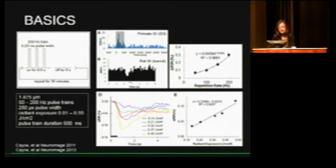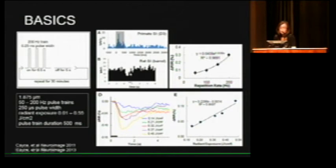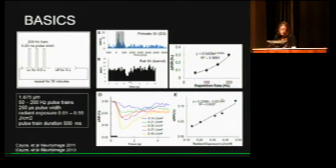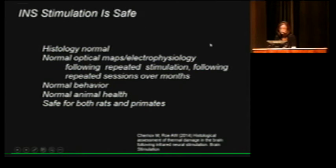We started this series of studies by characterizing the basics — recording electrophysiologically during INS stimulation. Typically it induces an excitatory response in neurons, though on occasion we see inhibitory responses, which I believe relates to the size of the fiber optic relative to the cortical column: if you invade the suppressive surround, you can get an inhibitory effect. If you increase the radiant exposure of the light, you get a larger, proportional response. Similarly, increasing the repetition rate gives an increased reflectance response as measured with intrinsic optical imaging. We characterized the range within which INS is effective and its effects on neurons and the hemodynamic response.